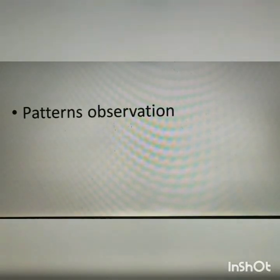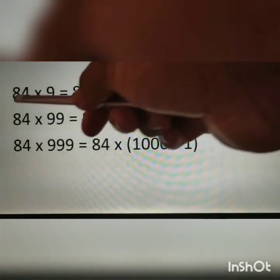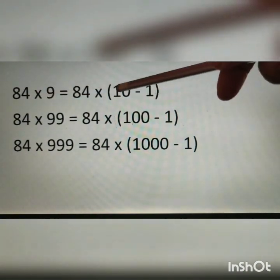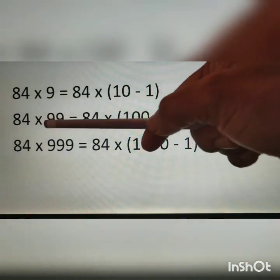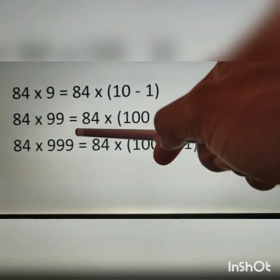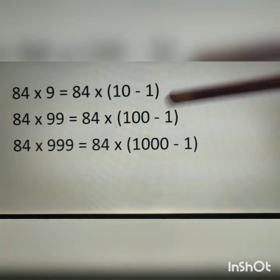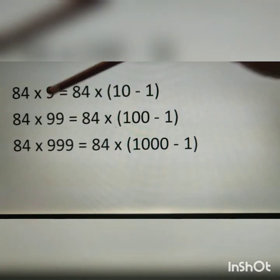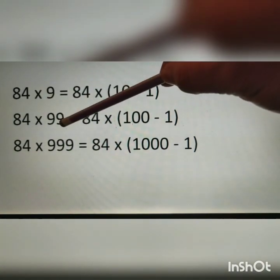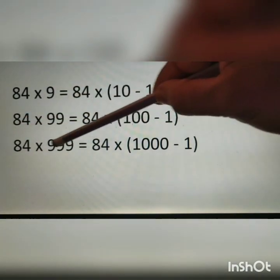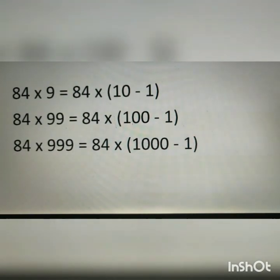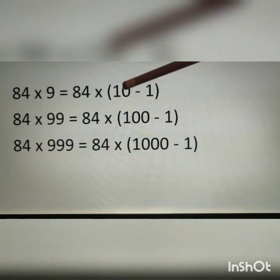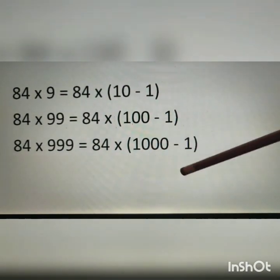Next is pattern observation. Here 84 times 9 is equal to 84 times bracket 10 minus 1. In the next line, 84 times 99 is equal to 84 times bracket 100 minus 1. Observing the pattern: in the first line there is one 9 and one 0; in the second line, two 9s and two 0s; in the third line, three 9s and three 0s. So in the next line there will be four 9s and four 0s.